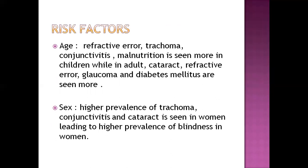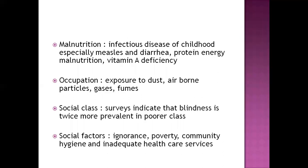Risk factors for blindness include age — refractive error, trachoma, and conjunctivitis are seen more in children, while cataract, refractive error, glaucoma, and diabetes are predominant in adults. Regarding sex, higher prevalence of trachoma, conjunctivitis, and cataract is seen in women, leading to higher prevalence of blindness in women. Malnutrition — specifically vitamin A deficiency and protein energy malnutrition — can lead to visual impairment. Continuous occupational exposure to dust or chemicals can also cause blindness. Social class surveys state that blindness is more prevalent in poorer populations where there is poverty, ignorance, lack of education, lack of community hygiene, and inadequate healthcare services.